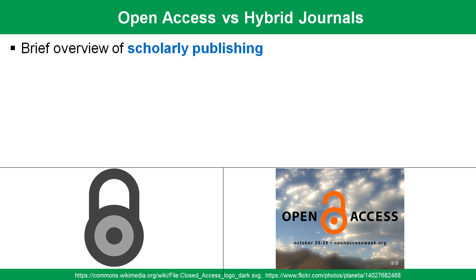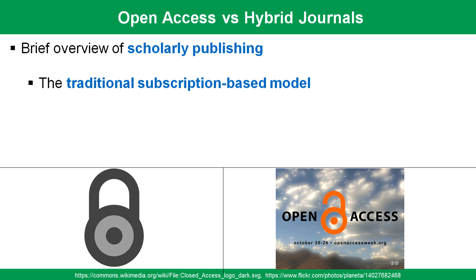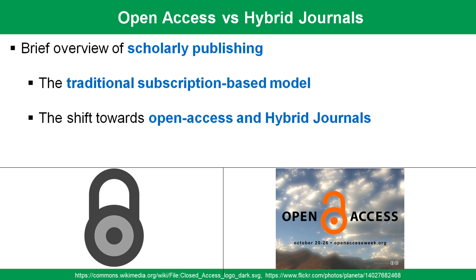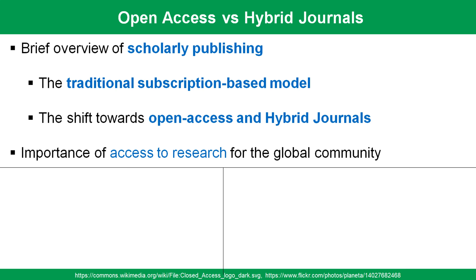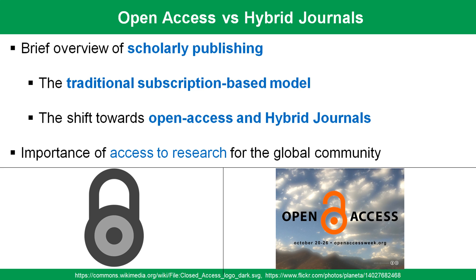Scholarly publishing has undergone significant transformations, transitioning from traditional subscription-based models to more inclusive approaches such as open access and hybrid journals. This shift is driven by the need for broader access to scholarly information. As the global community increasingly relies on research findings, understanding the dynamics between open access and hybrid journals becomes crucial for researchers, institutions, and publishers.